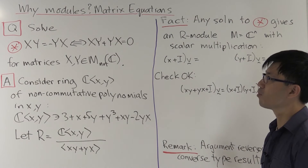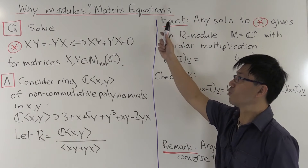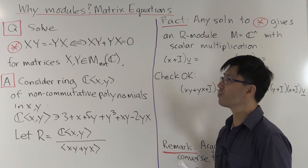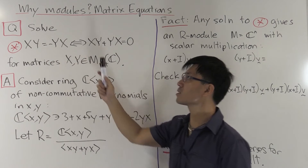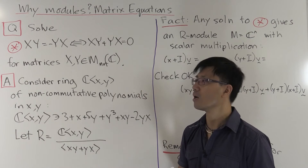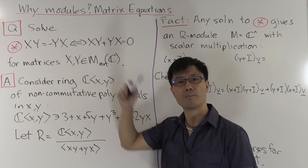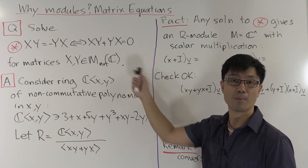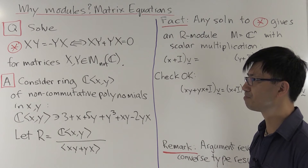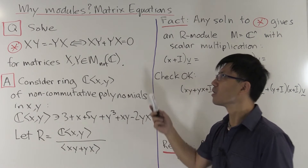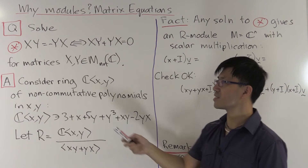So why are we interested in studying modules? There are many answers, but one reason they crop up is when we're trying to solve matrix equations. Let's look at a very simple example: let's solve xy equals minus yx, which is the same as xy plus yx equals zero — not for scalars, but for matrices x and y, where x and y are square, say n by n. These types of equations occur very often in physics, particularly in quantum mechanics. I want to show you that solving matrix equations naturally gives us modules and leads us to the theory of modules.